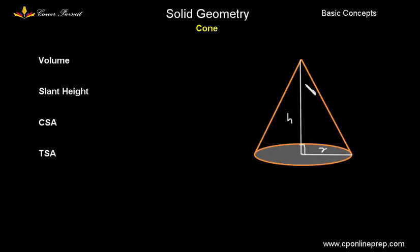And say this is height H. So this is 90 degrees. So you can say that this triangle is a right angle triangle and this is a slant height. So let us take it as L. So applying Pythagoras theorem in this right angle triangle, we get that L square is equal to R square plus H square.